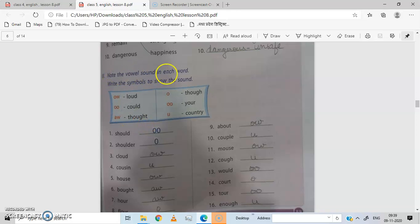Note the vowel sound in each word. Write the symbols to show the sound. You see, there are different sounds of vowels. O, W, aw, loud sound. Loud, in loud O-W sound comes, aw. Loud, out. You have double O sound, could. Thought has aw sound. Though has O sound. Your has double O sound. Country has U sound. We have to tell in these words which sound is coming.